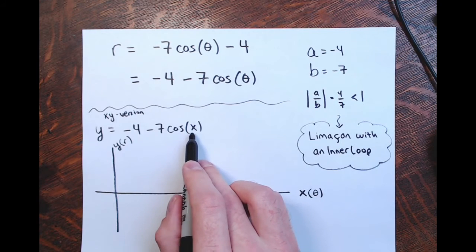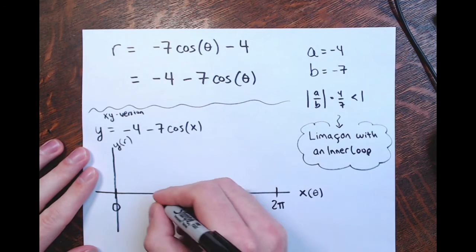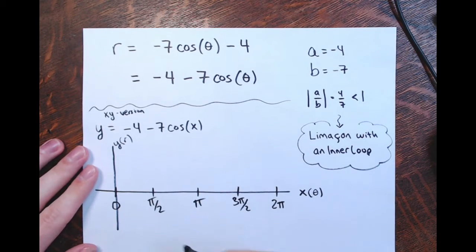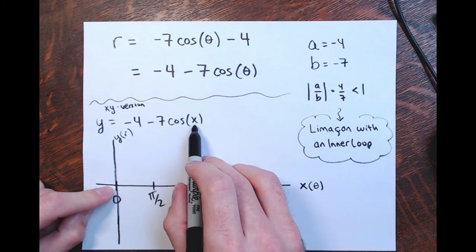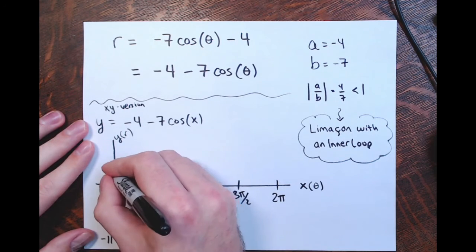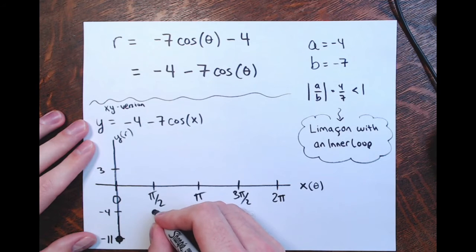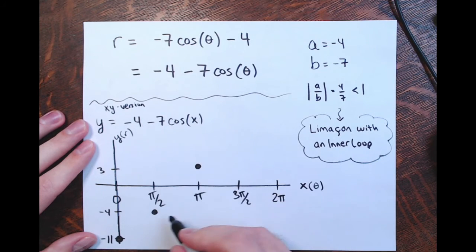This is a cosine function, so the period is going to be 2π. I'll break this up into quarters for the key values. Cosine of 0 is 1, so negative 7 plus negative 4 would be negative 11. Negative 4 is the midline, the amplitude is 7, so positive 3 is the highest value. At π over 2 we get negative 4, at π the value is 3, at 3π over 2 back to negative 4, and at 2π back to the lowest value of negative 11.